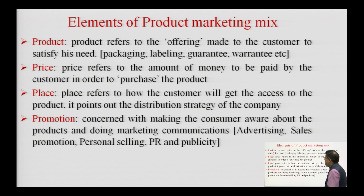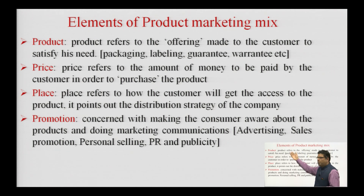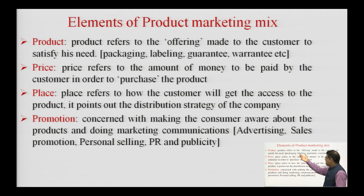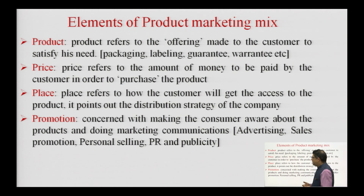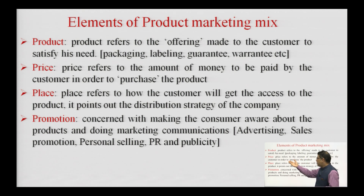On this slide, all four elements are defined. Product refers to the offering made to the consumer to satisfy needs — it also includes packaging, labeling, guarantee, warranty, etc. Price refers to the amount of money to be paid by the consumer in order to purchase or own the product. While the product is tangible, we become the actual owners, pay the money, bring the product home, and can use it in any manner we feel like.